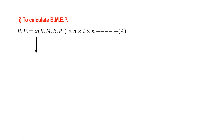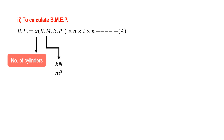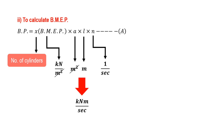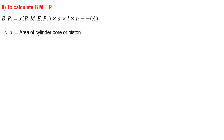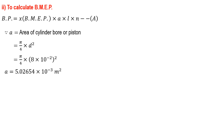Now we find brake mean effective pressure. Brake power equals number of cylinders multiplied by brake mean effective pressure (in kPa, i.e., kN/m²), multiplied by area in m², stroke length in m, and number of working strokes per second. The m² units cancel to give kNm per second, i.e., kW. First, the area of the cylinder: pi over 4 times D squared, substituting D gives area equal to 5.0265 into 10 to the minus 3 m².